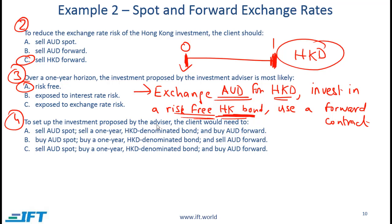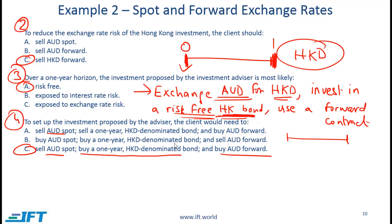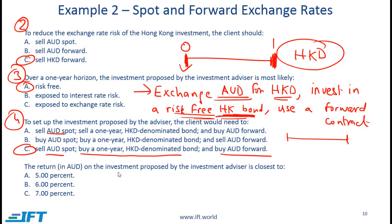Question 4 asks what the client needs to do to set up the investment. The client sells Australian dollars in the spot market, buys a one-year Hong Kong-dollar-denominated bond, and uses a forward contract to sell Hong Kong dollars after one year — which is the same as buying Australian dollars in the forward market. The correct answer is C.